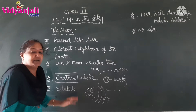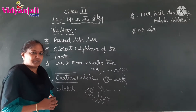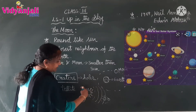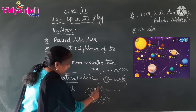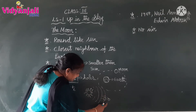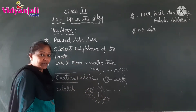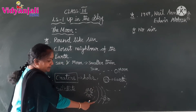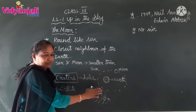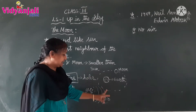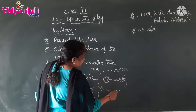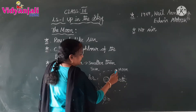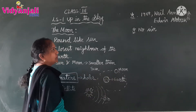The moon is the natural satellite of the earth. What is a satellite? A satellite looks like a planet, but the difference is: all the eight planets are revolving around the sun, while satellites move around the planets. That is the difference between a planet and a satellite. I will draw a picture here — this is the earth, and the moon is moving around the earth. It is a natural satellite of the earth.